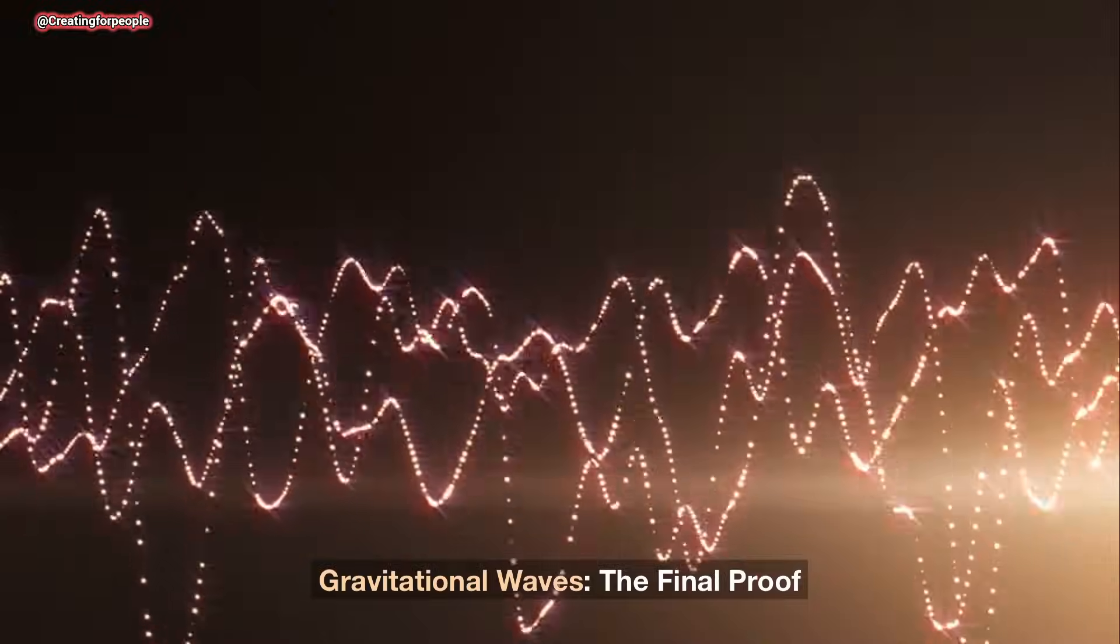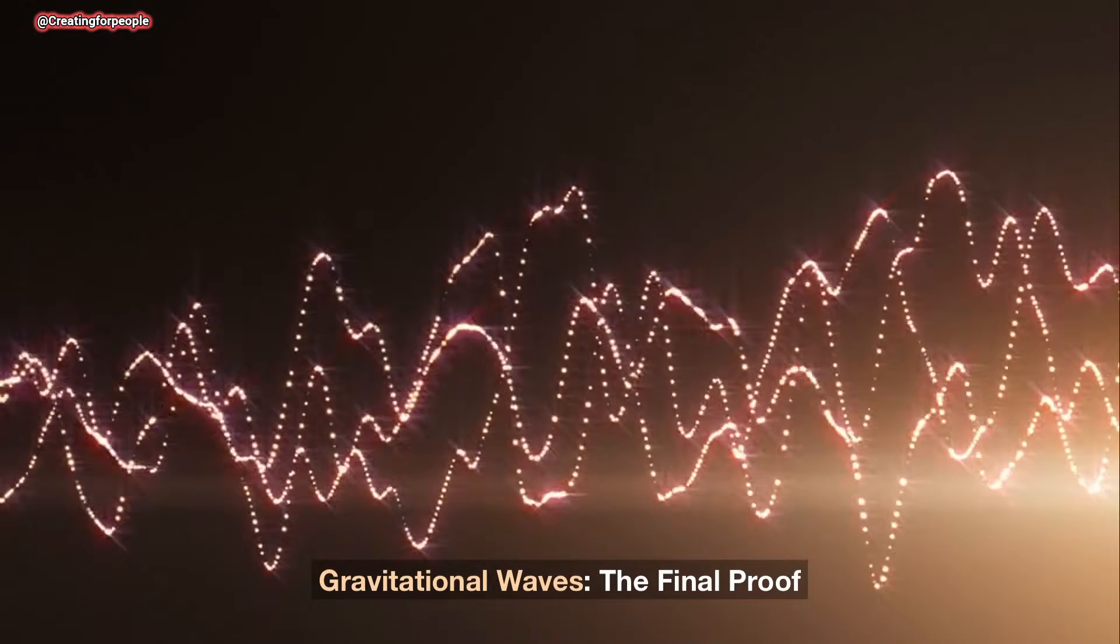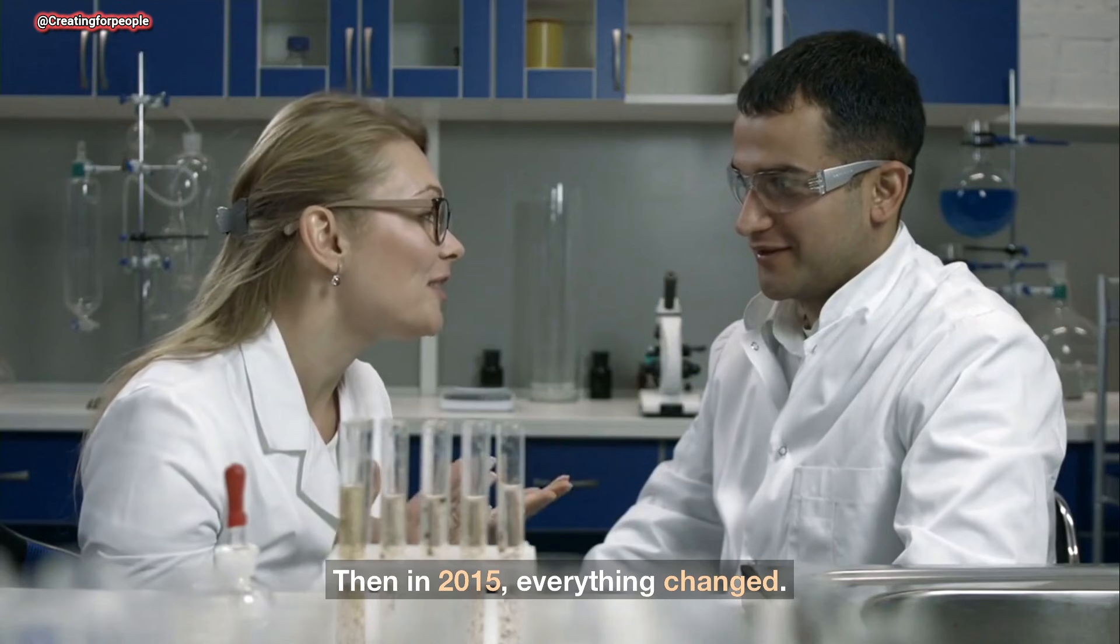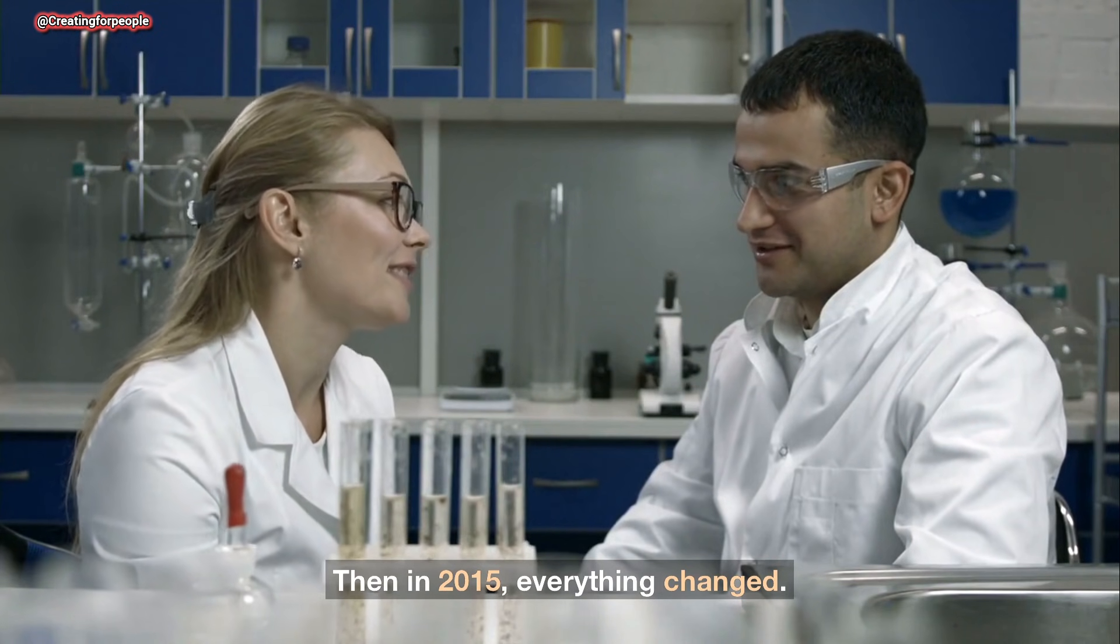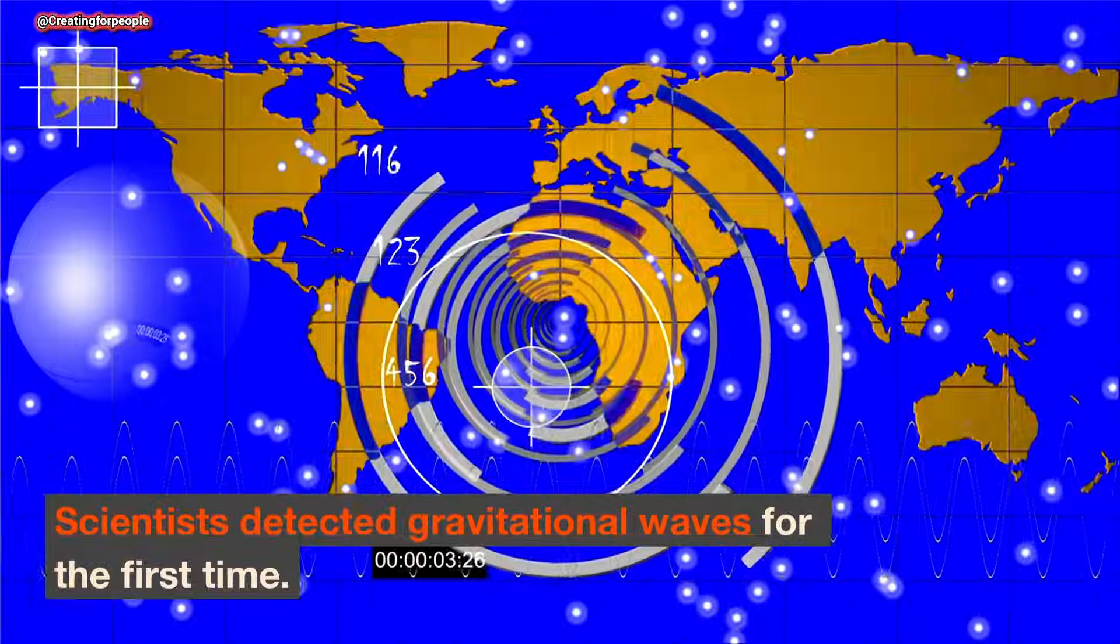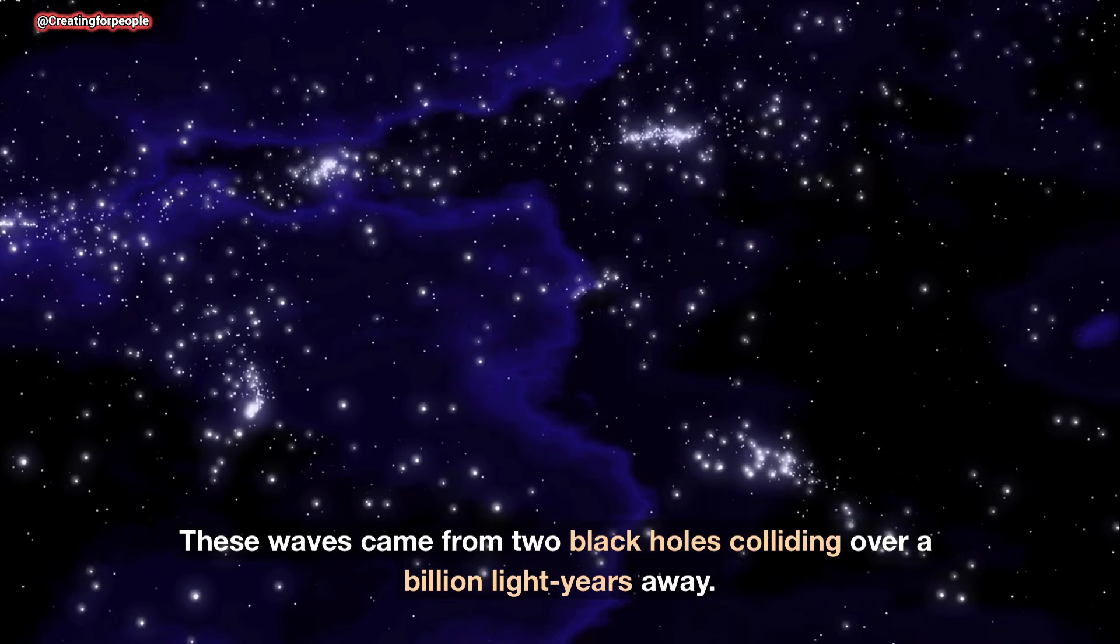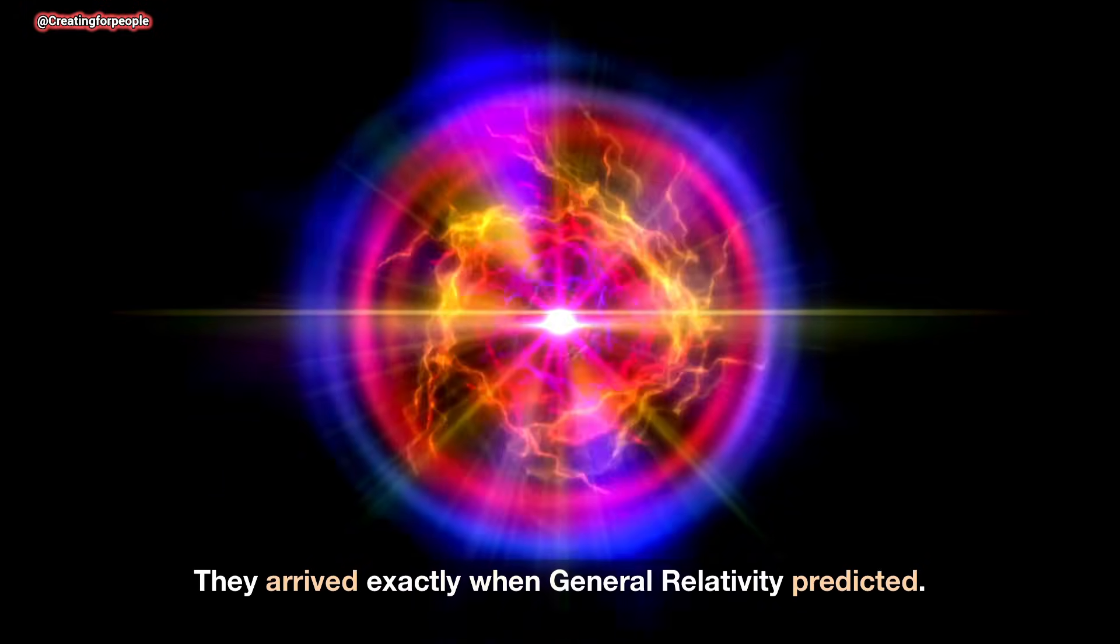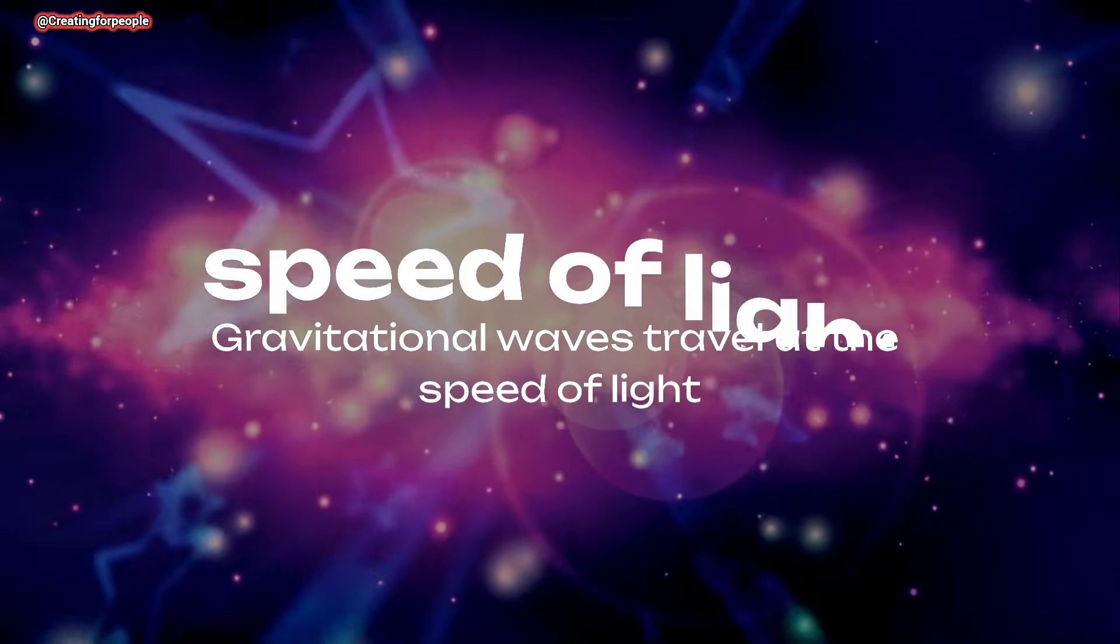Gravitational waves: the final proof. For decades, this idea remained theoretical. Then in 2015, everything changed. Scientists detected gravitational waves for the first time. These waves came from two black holes colliding over a billion light-years away. They arrived exactly when general relativity predicted, at the speed of light.